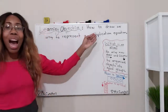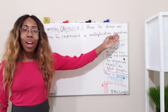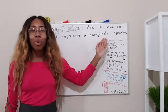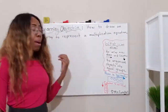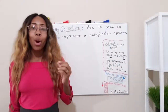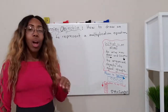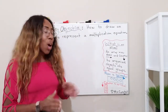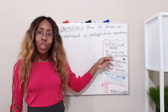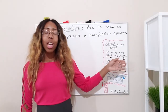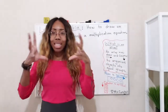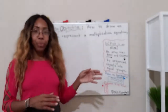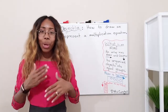Today we're going to learn how to draw an array to represent a multiplication equation. In my first lesson, part one, I showed you all what an array is. An array is just a way of using rows and columns to organize objects into equal groups. And remember, this is a quick refresher.